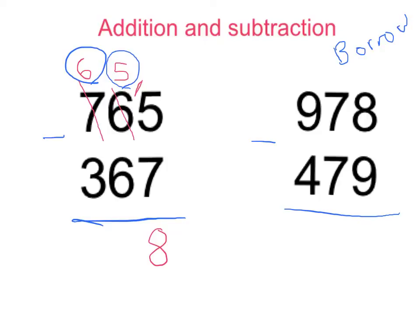Oh sorry, and obviously we need to, we can't forget to put our 1 back over there so that makes it 15. So 15 take away 6 and we know that is 9. So now we're left with just 6 take away 3 which equals 3. So the answer is 398.